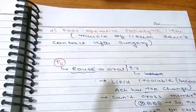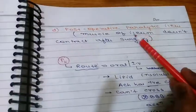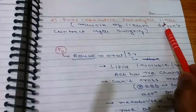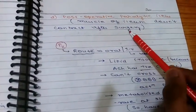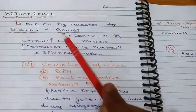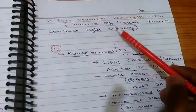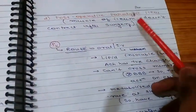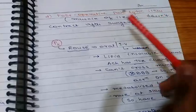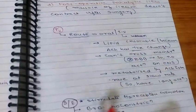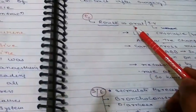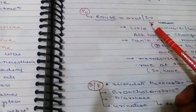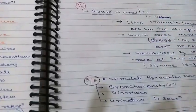The fourth indication is post-operative paralytic ileus — the muscles of the ileum do not contract after surgery. Since bethanechol affects both bladder and bowel movement, it also helps to increase ileal motility.